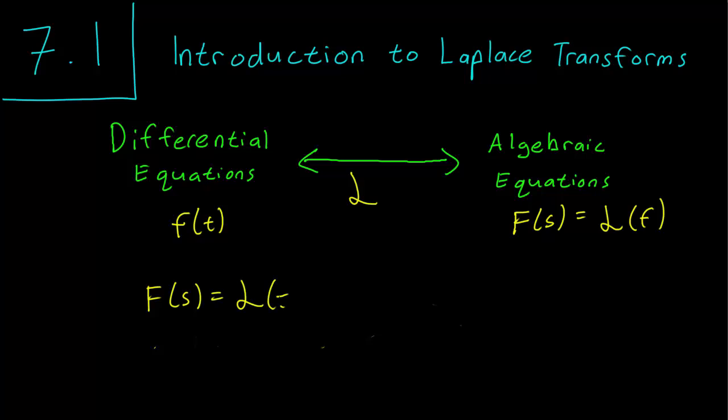And how the dictionary works is that F(s) or the Laplace transform of little f is just going to be e^(-st) f(t) dt taken from 0 to infinity.